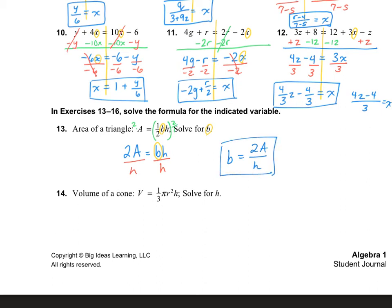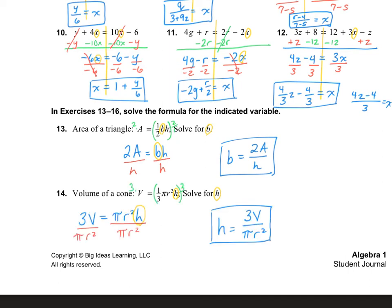Let's take a look at number 14 — this is the volume of a cone, and we need to solve for H. I'll do the same thing as number 13: multiply by the inverse of the fraction, then divide out what I don't need. I'll let you try number 14 on your own since it's very similar to number 13. The answer is H equals 3V over pi R squared.